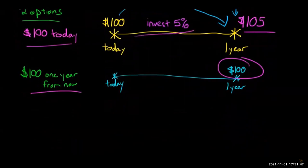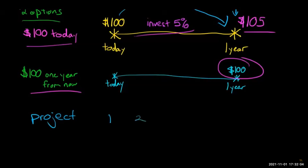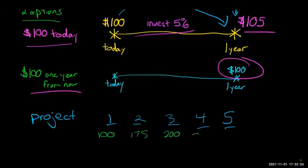This has real world applications. Let's say a firm is thinking about a project — buying a machine that generates cash flows over five years. You look at those different years and estimate: year one $100 in cash flow, year two $175, year three $200, year four $300, and in the last year only $50. You can't just add all these together — you have to take into account that $50 five years from now is not worth the same as $50 today.